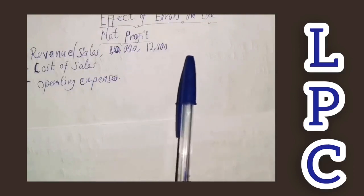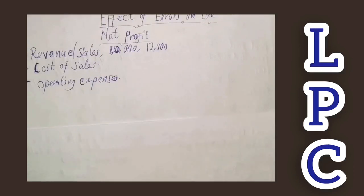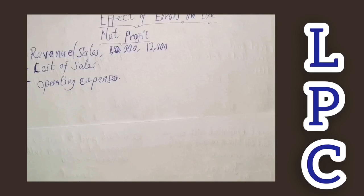When there is an overcast in sales causing an increase in profit, you correct it by subtracting the difference from the net profit. But when there is an undercast or a decrease in sales, to correct it you add the difference back to the net profit.